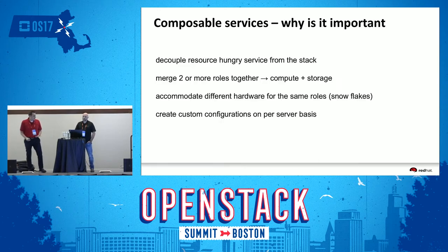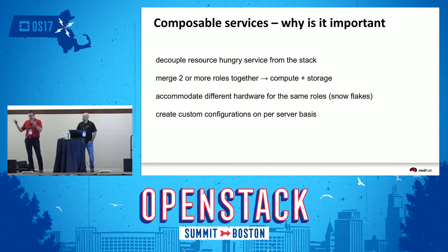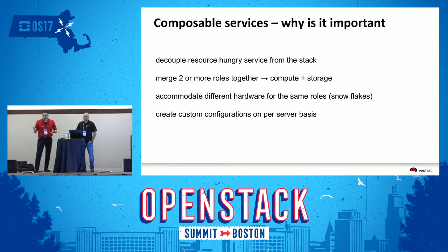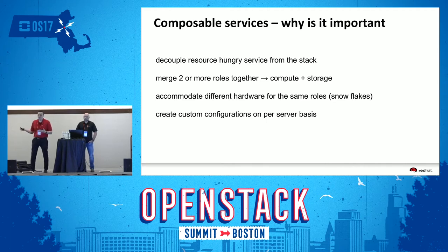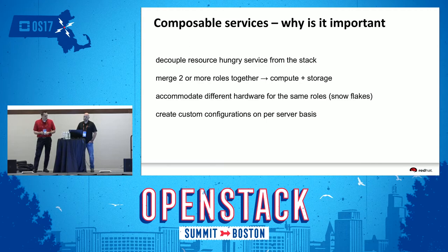This is important because you can decouple resource-hungry services. If you're running multi-cloud and your Keystone is being hammered all the time, you can detach it from your monolithic deployment and run it somewhere else. Or you can merge storage and compute if you have limited space in your data center. You can accommodate different hardware snowflakes and create custom configurations very easily with Triple O.